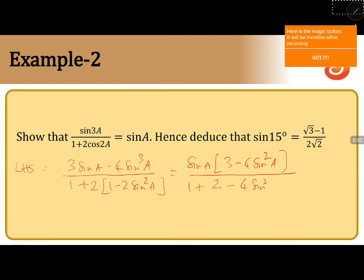The denominator simplifies to 3 minus 4 sin²A, so we have sin A times (3 minus 4 sin²A) divided by (3 minus 4 sin²A).